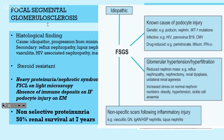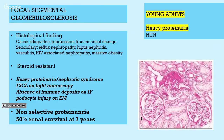Focal segmental glomerulosclerosis is actually a histological finding, not a clinical cause. Causes are variable — mostly idiopathic, but it can be a bad outcome from another nephrotic disease like minimal change or membranous, or other reasons. In EMQs, it's typically young adults with heavy proteinuria and a poor prognosis — they often end up with end-stage renal disease. Histologically, you see segments that are thickened up.